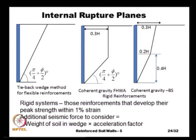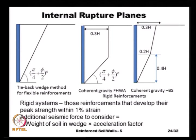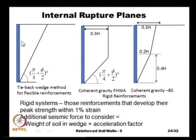BS 8006 recommends a bilinear wedge where the width is 0.3H at the top and 0.2H at a height of 0.4H from the base. The weight of the soil within the active wedge — either the simple triangular wedge or the bilinear wedge — is used in all seismic calculations. For the coherent gravity method, K = 2.5 × K_a at the top for welded wire meshes, with the earth pressure coefficient distributions being more conservative in the Federal Highway Administration guidelines.